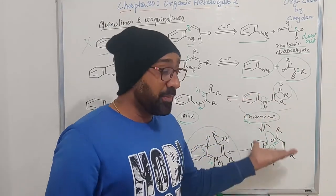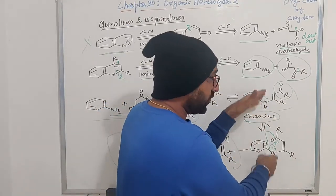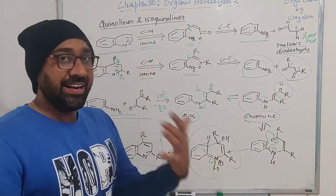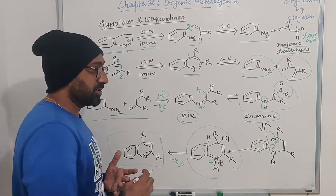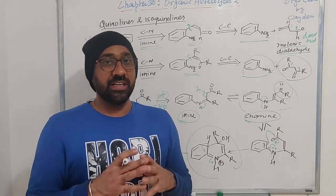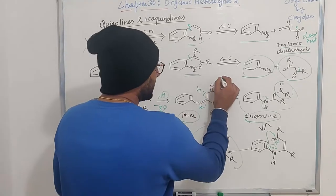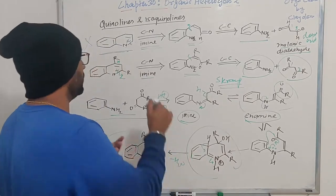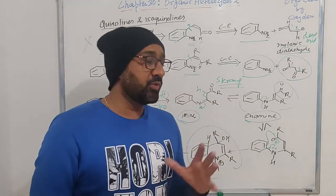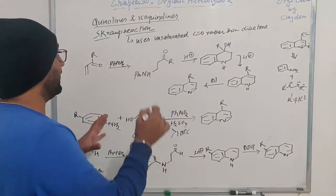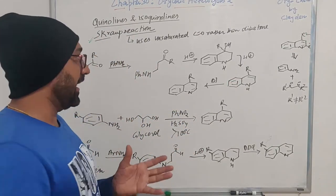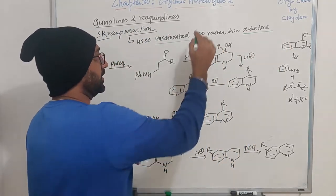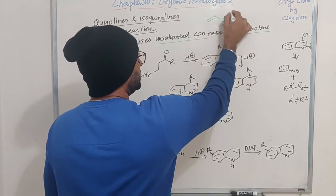This is not good enough to give an elegant synthesis of quinolines. So now we are going to discuss one very important name reaction — that is the Skraup reaction, which is mostly used for the synthesis of quinolines. In this particular reaction, rather than using the diketone, what we use is an unsaturated carbonyl.